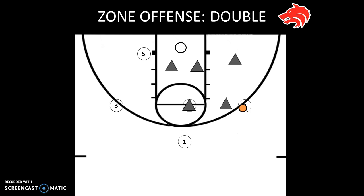Two is going to take two to three dribbles down towards the baseline to hopefully draw that low defender. One is going to follow and take two's position on the wing for an eventual pass back. As two dribbles down, the high post player retreats back to the low post. One is following two, and then the next step is for two to pass it back to one.